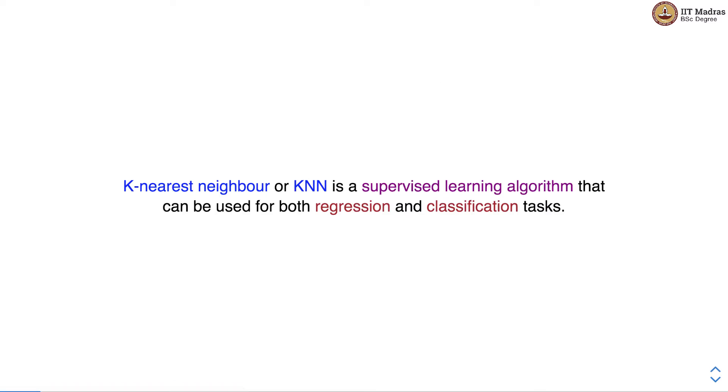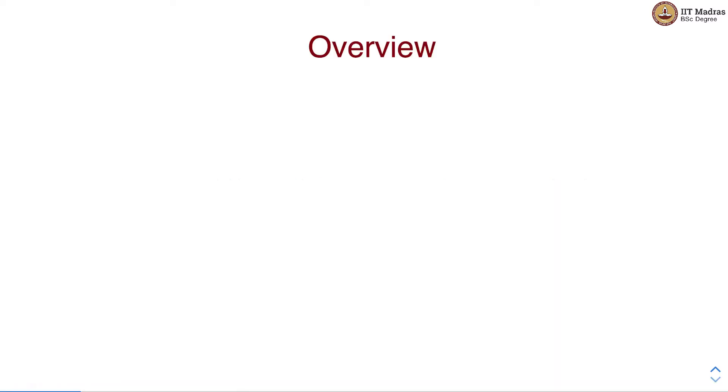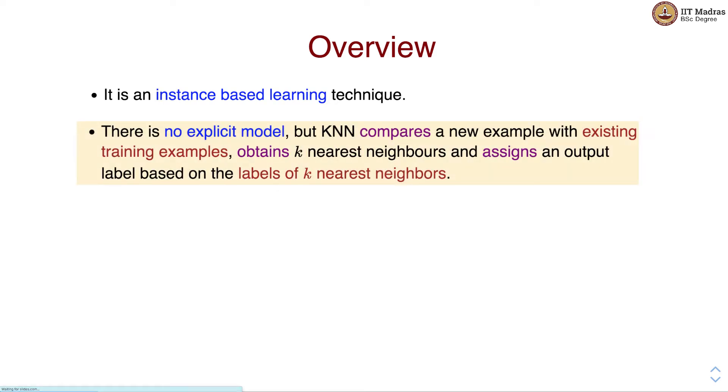KNN is a supervised learning algorithm that can be used for both regression and classification tasks. It is an instance based learning technique. There is no explicit model but KNN compares a new example with existing training examples, obtains K nearest neighbors and assigns an output label based on the labels of the K nearest neighbors.